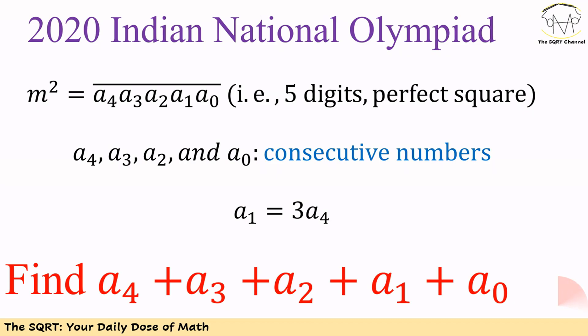The number is shown as a4, a3, a2, a1, and a0. We also know that a4, a3, a2, and a0 are consecutive numbers. They are all integers, and a1 is equal to 3 times a4. We want to find the sum of all the digits in the number. Before moving to the solution, make sure that you pause to think about the problem.